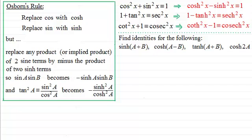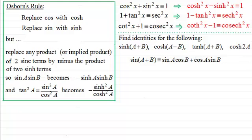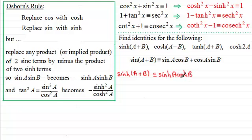Welcome back. For sinh of a plus b, this is derived from the trigonometric identity sine of a plus b, which is identical to sine a cos b plus cos a sine b. Using Osborne's rule, we replace sine a with sinh a and cos b with cosh b, giving us sinh a cosh b for the first term, and then plus cosh a sinh b for the second term.